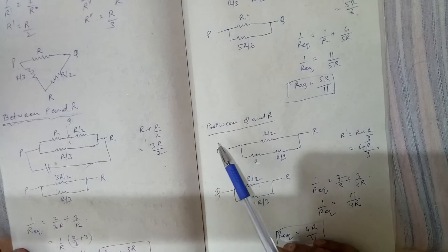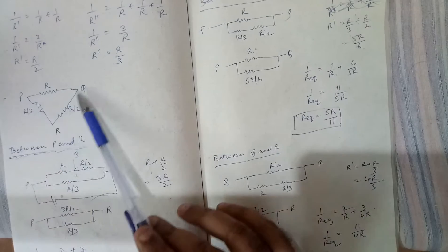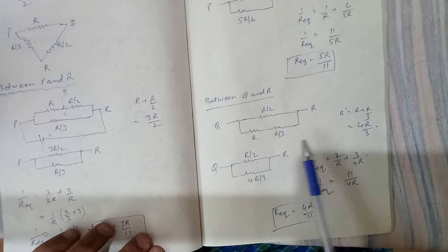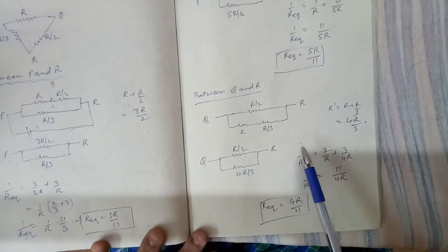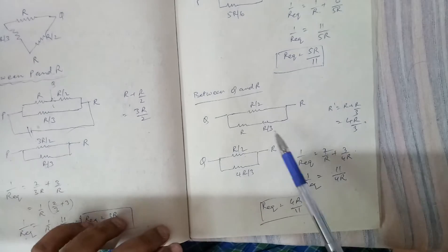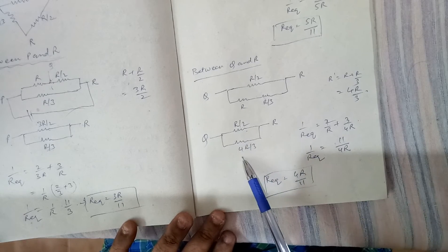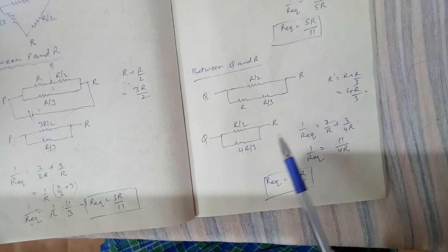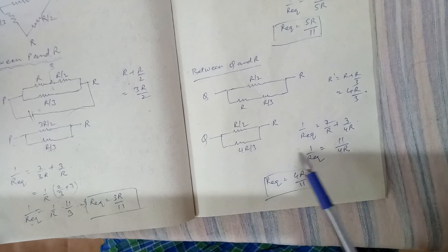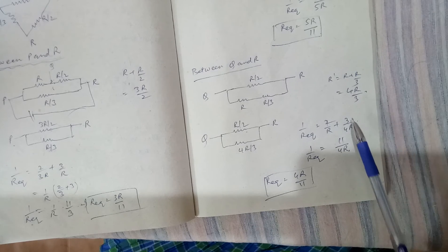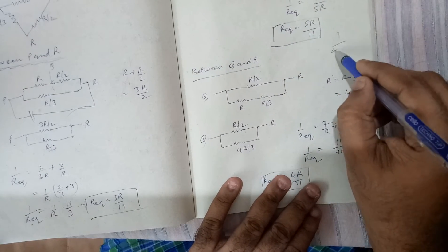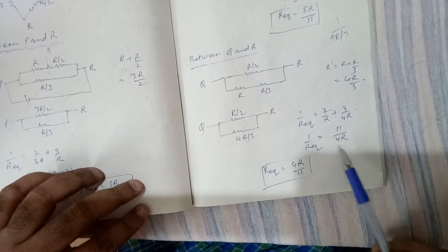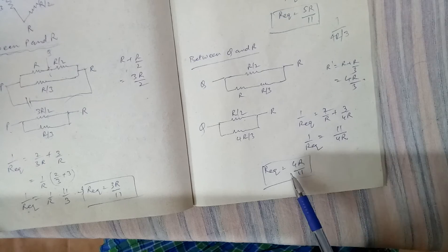Now the third possibility: between Q and R. Directly Q to R, R by two is there. P to Q and P to R will be in series: R plus R by three equals four R by three. Now R by two and four R by three are in parallel, so one by R equivalent equals two by R plus three by four R, giving eleven by four R. Therefore R equivalent between Q and R equals four R by eleven.